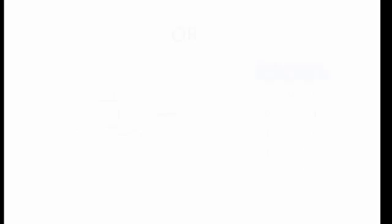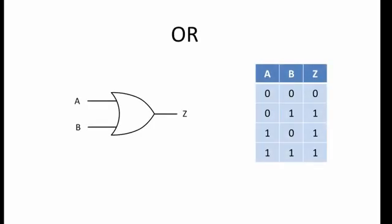And finally, this is the OR gate. When one or the other input is a 1, the output is a 1. Also, when both inputs are 1, the output is a 1.